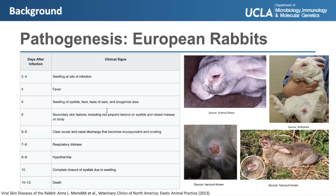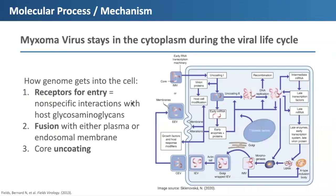In order to understand why there might be differences in pathogenesis due to different strains, let's look at the viral life cycle and molecular mechanisms of myxoma virus. Regarding entry into the cell: studies as new as 2020 state that the binding and entry mechanisms for myxoma and many pox viruses are relatively unknown. Most information is based off studies of vaccinia virus, with the assumption that they apply to other pox viruses. Myxoma receptors are generally nonspecific, and entry into the cell is mediated through several viral proteins through fusion with the plasma or endosomal membrane. Fusion is activated via low pH, but no cell receptor has been identified.